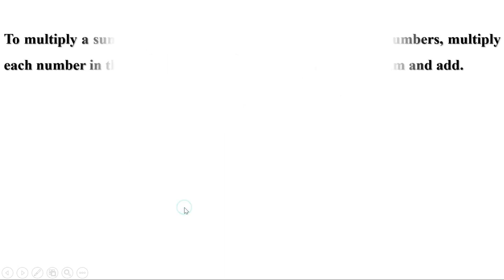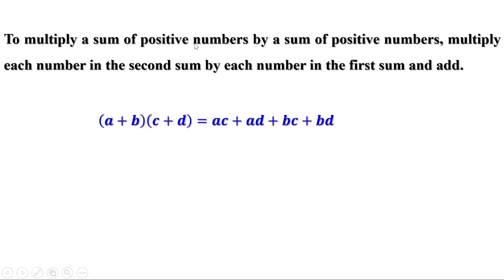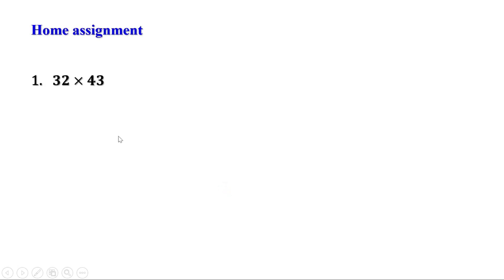Today we have learned one identity: to multiply a sum of positive numbers by a sum of positive numbers, multiply each number in the second sum by each number in the first sum and add. That is a plus b into c plus d equal to ac plus ad plus bc plus bd. There are two homework problems: first, 32 into 43; second, 10.3 into 20.2. In the next video we shall discuss the remaining part. Till then, bye.